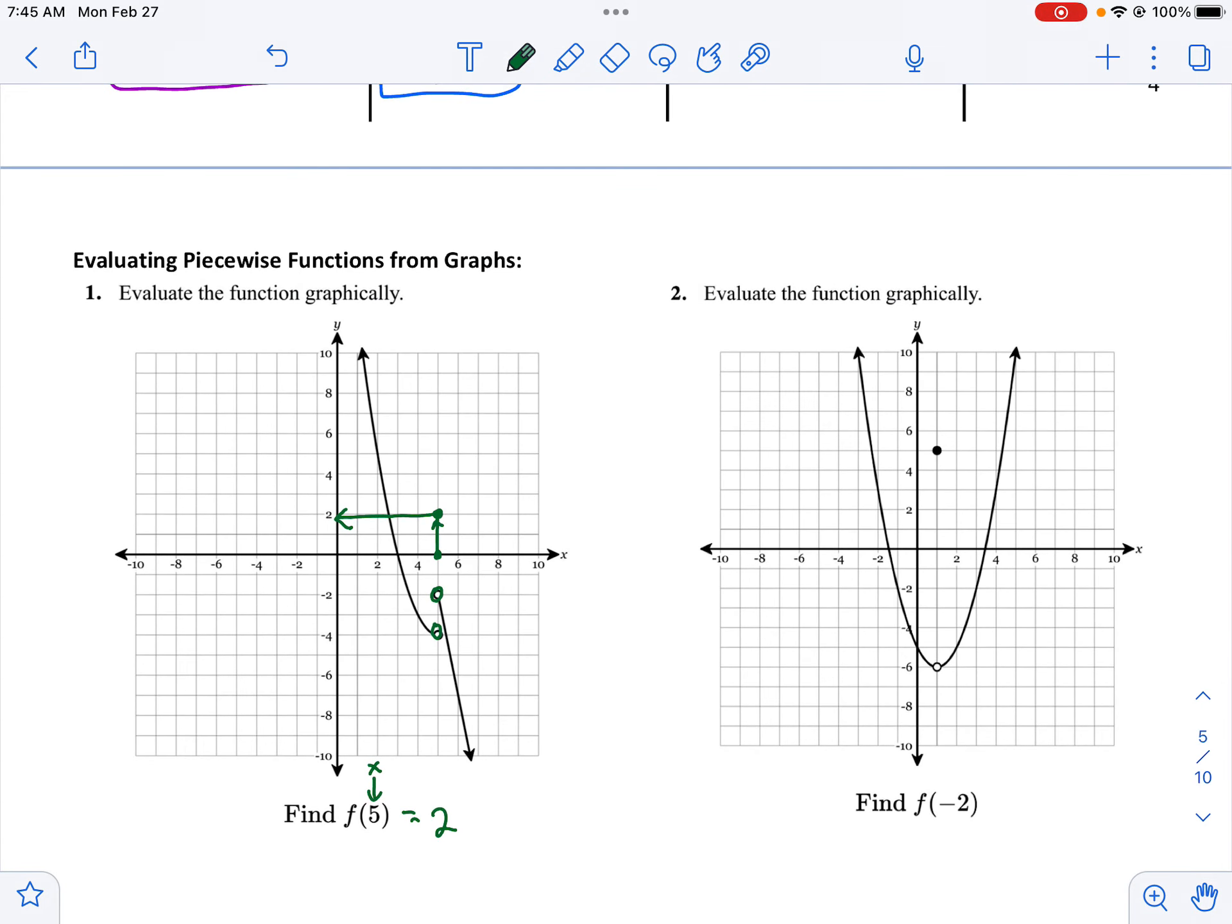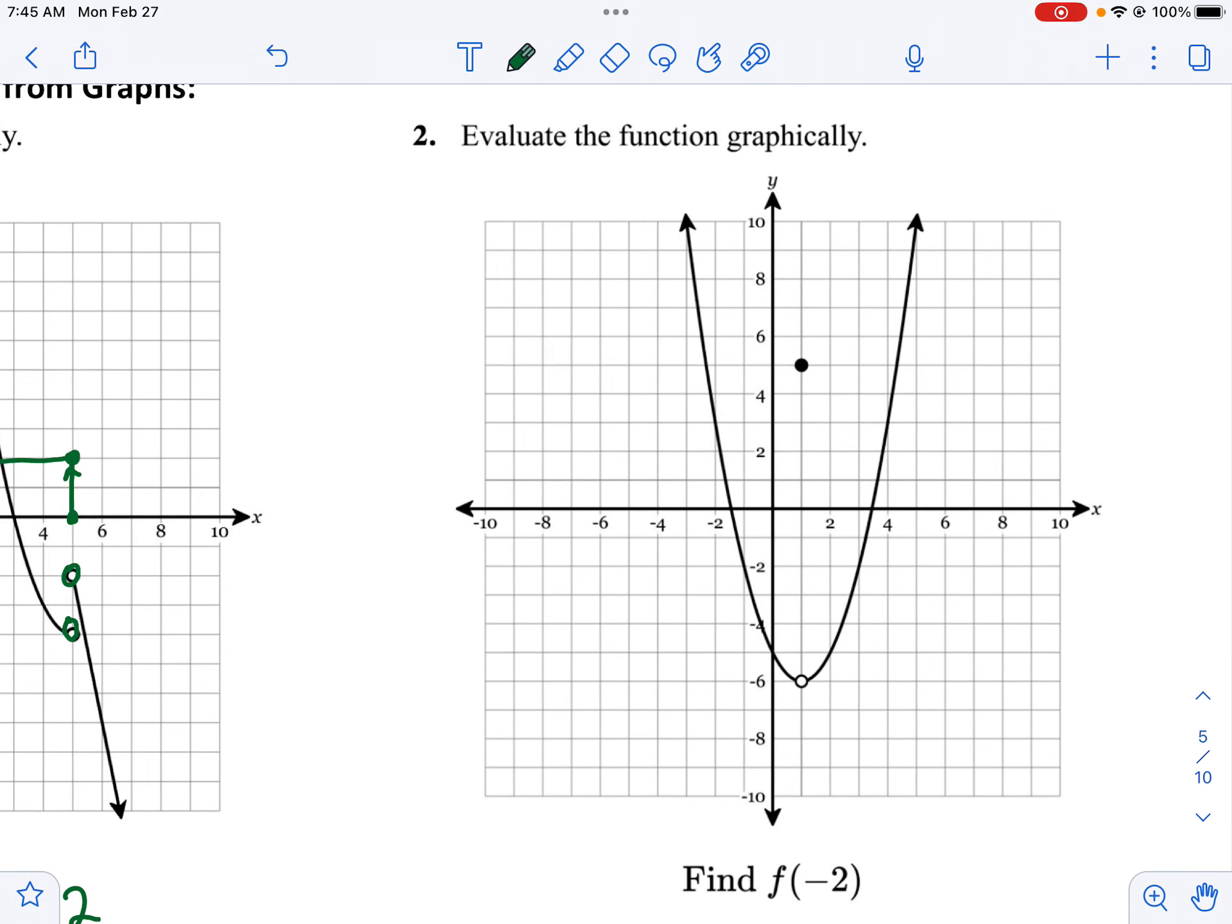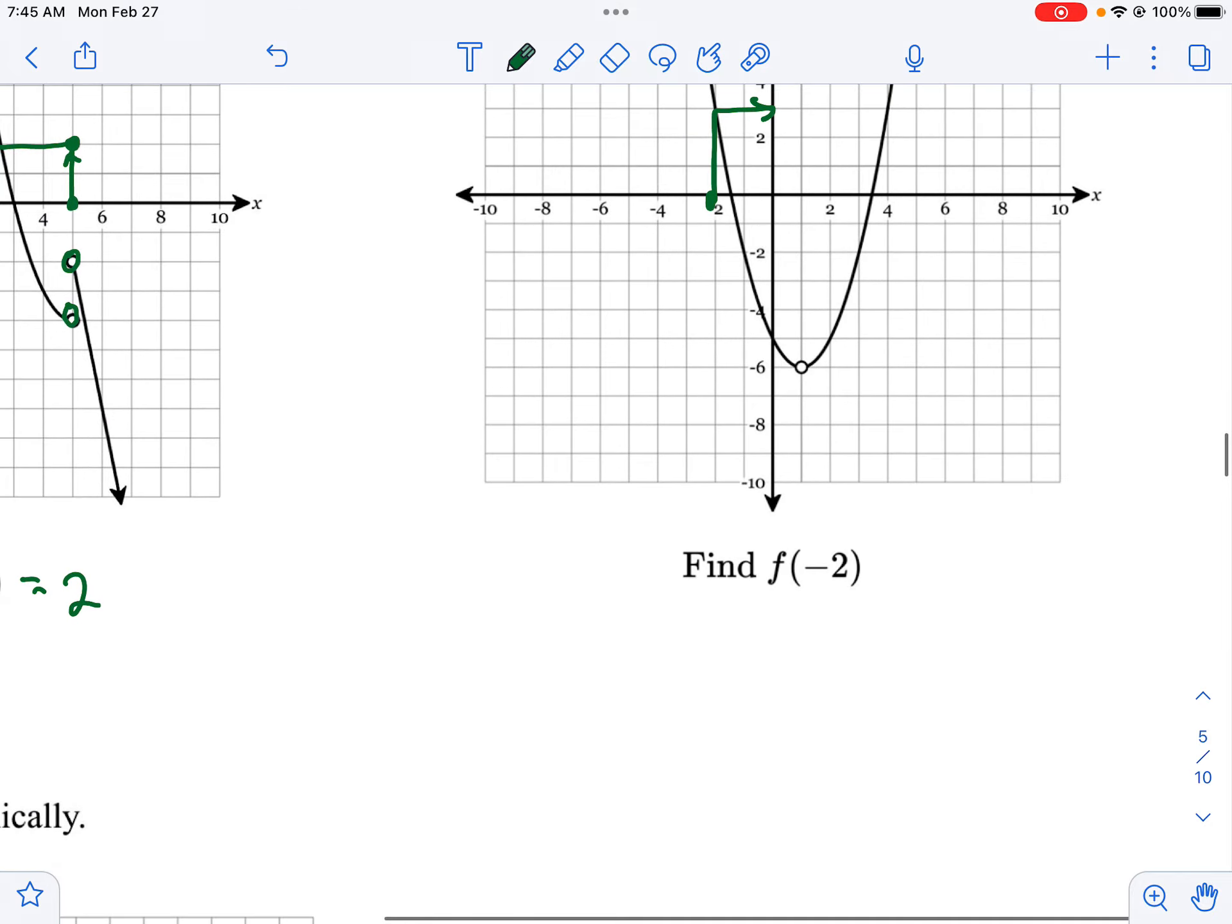Okay let's try the next one. So this one is find f of negative 2. Okay so go to negative 2. Go up or down until you hit the graph. And it goes up this time when we hit the parabola. And if we go over that is 3.